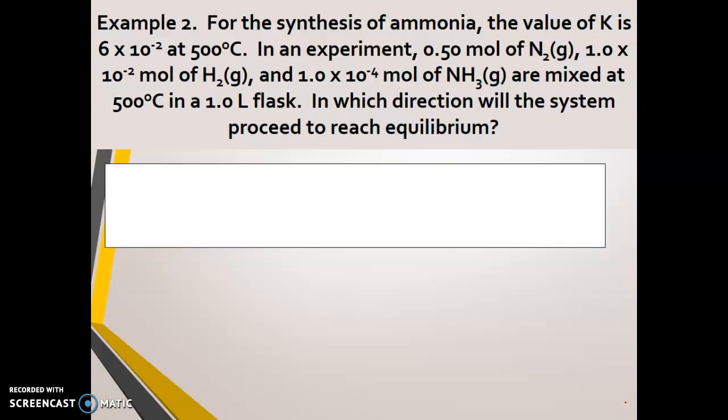So in this example, it says for the synthesis of ammonia, the value of K is 6 times 10 to the negative second at 500 degrees Celsius. In an experiment, 0.50 moles of nitrogen and 1.0 times 10 to the negative second moles of hydrogen and 1.0 times 10 to the negative fourth moles of ammonia are mixed at 500 degrees Celsius in a one liter flask. In which direction will the system proceed to reach equilibrium?